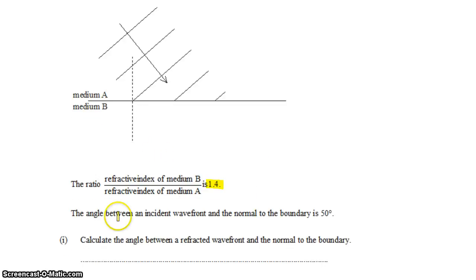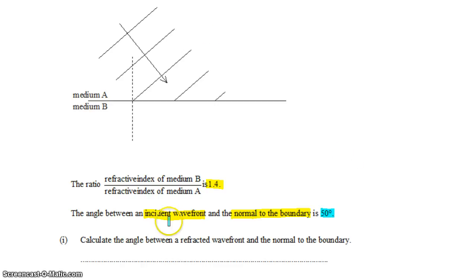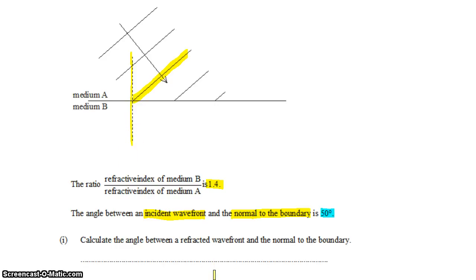We're also told that the angle between the incident wavefront and the normal to the boundary is 50 degrees. The incident wavefront is any of the three wavefronts striking the boundary, and the normal to the boundary is this dashed line. The angle between those two lines — 50 degrees — is shown here.